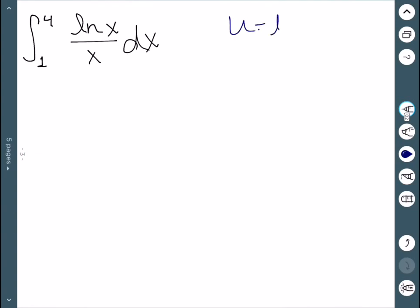So we're going to let u be equal to ln of x, which makes du 1 over x dx. So this over x dx becomes du, and the ln is just u.